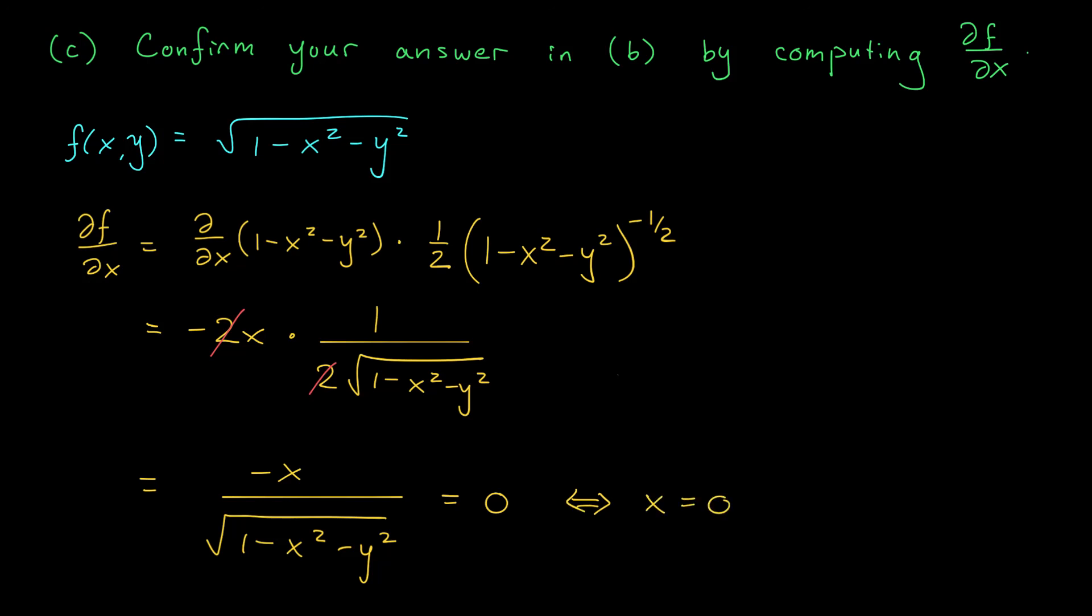But hold on, what about y? Well, y is allowed to be whatever you want, but we don't want to be taking the square root of a negative number. So we should restrict y to lie somewhere between minus 1 and 1. If it's outside that range, we're going to be square rooting a negative number. So our final answer is the set of all (x,y) where x is equal to 0 and y is between minus 1 and 1, just like we found in part b.